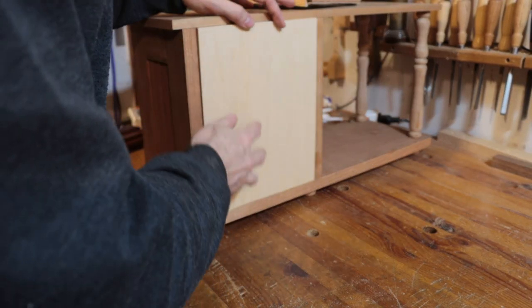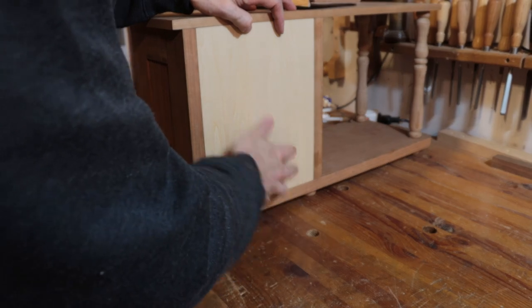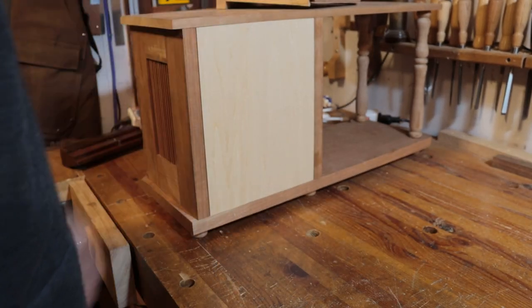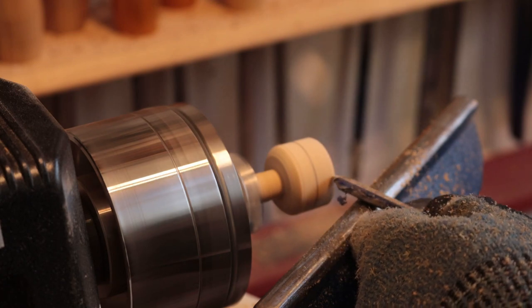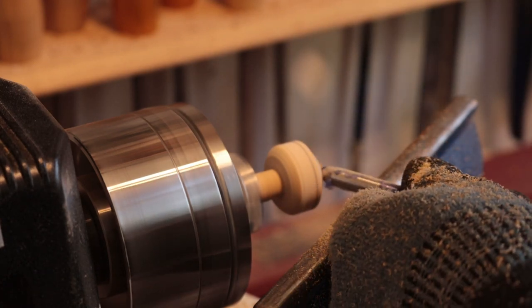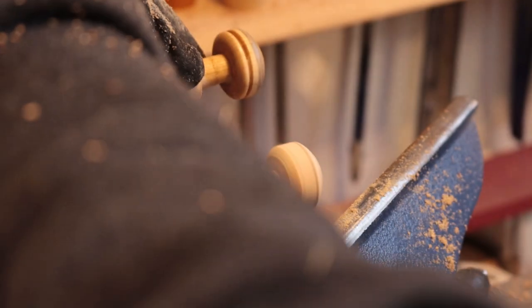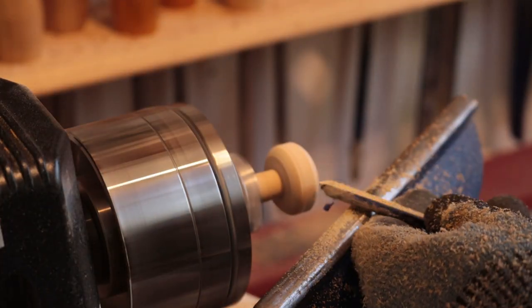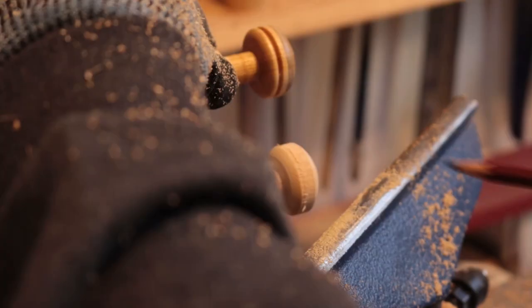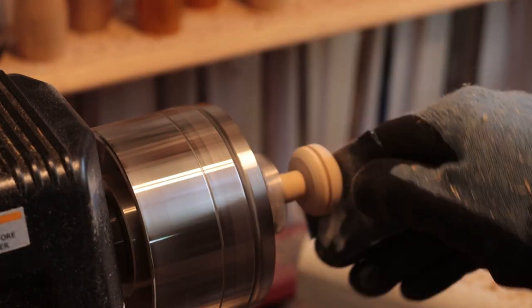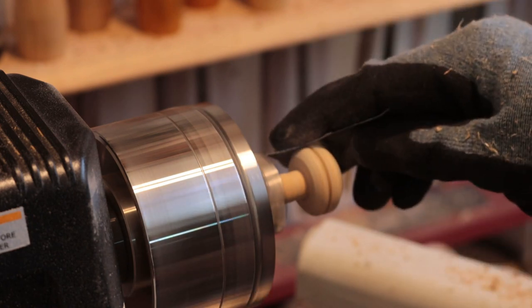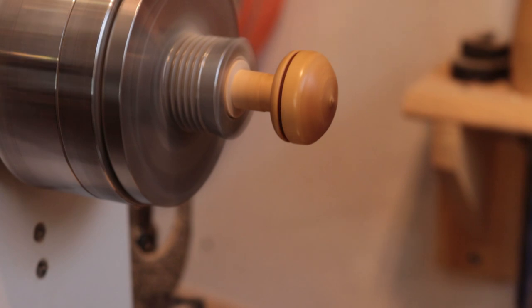Now that the drawers are done I could finally make the back of the carcass. I made this out of plywood. Really not much to explain here. And then I went on to turning the knobs for the drawer fronts. I used cherry again just to kind of bring the whole design together. After I turned these knobs I then used some friction oil to put a nice finish on them while they're still on the lathe.